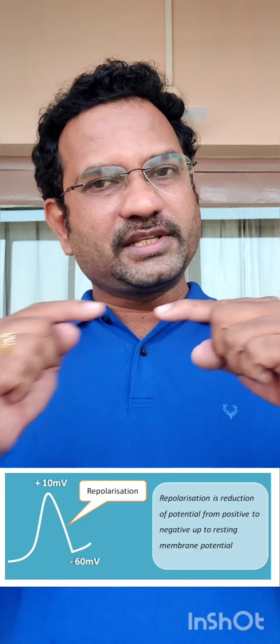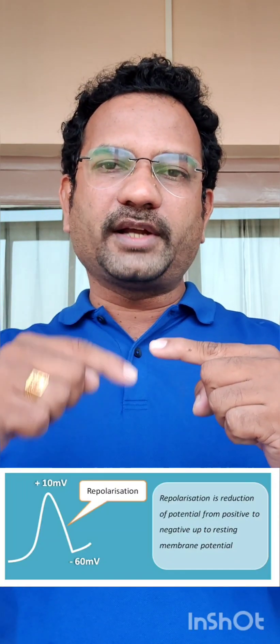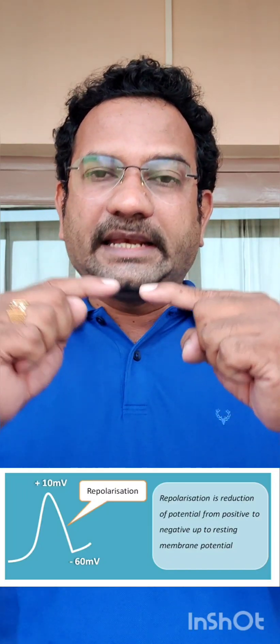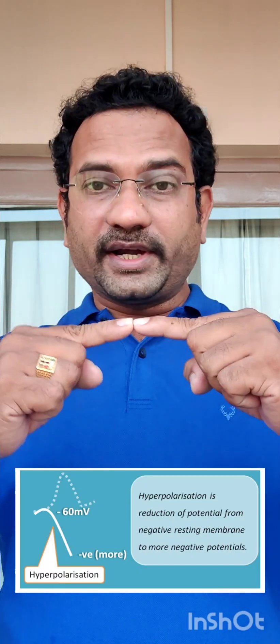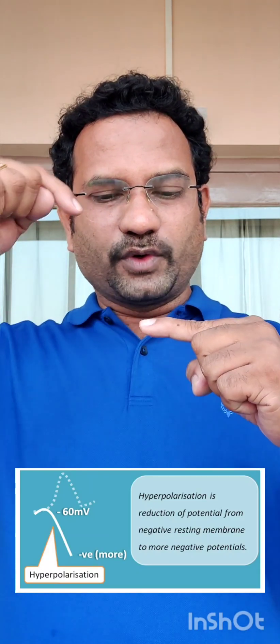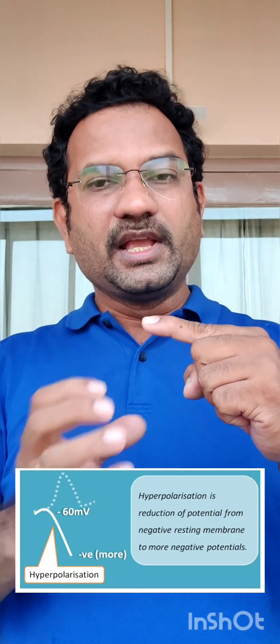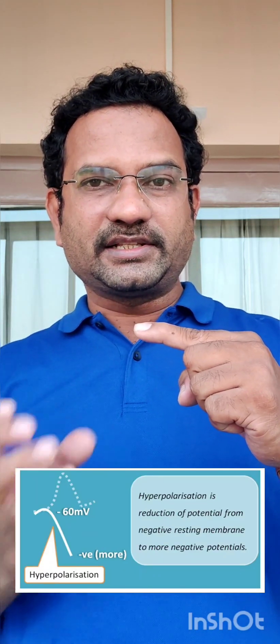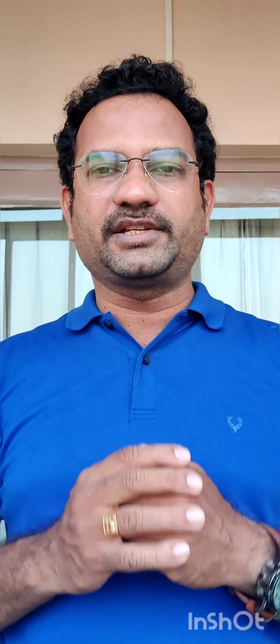So depolarization is the inside becoming positive, and repolarization is making it return to the normal polarity state — that is, negative inside the cell. Now sometimes the negative charge goes to a higher level. Imagine if a chloride channel opens — chloride has a negative charge. If chloride ions enter, the negative charge inside the cell membrane increases. That is called hyperpolarization.